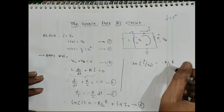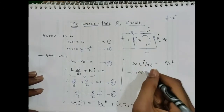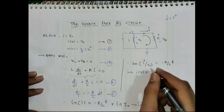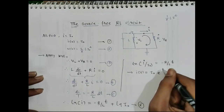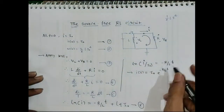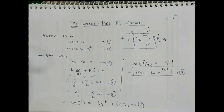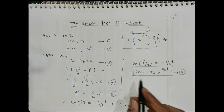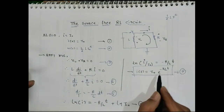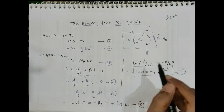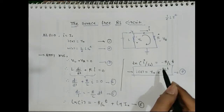Taking the exponential of both sides, we get the final answer: I(t) = I₀ · e^(−R/L · t). This is equation number 7. This shows that the natural response of the RL circuit is an exponential decay of the initial current I₀. Comparing with the RC case, where V(t) = V₀ · e^(−t/τ) with τ = RC, we see the same exponential form.